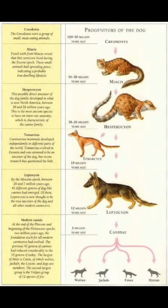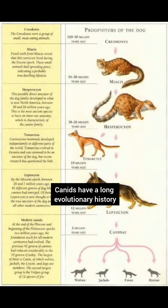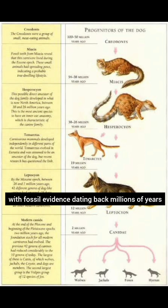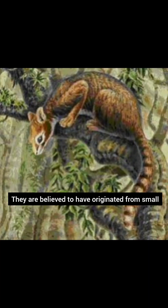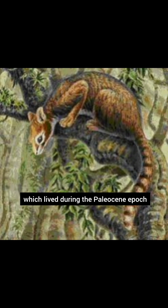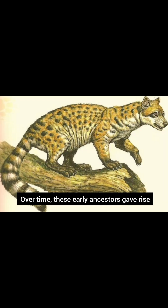Evolutionary History. Canids have a long evolutionary history, with fossil evidence dating back millions of years. They are believed to have originated from small, weasel-like mammals known as miacids, which lived during the Paleocene epoch. Over time, these early ancestors gave rise to the diverse array of canid species we see today.